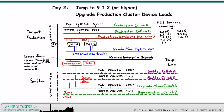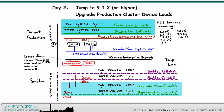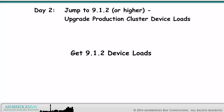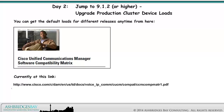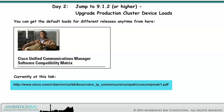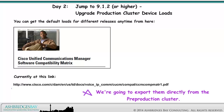This is an overview of the Jump Lab. This drawing looks at activities on the production and pre-production clusters. First, we need to get the 9.1.2 device loads. We do that using our cleanly installed 9.1.2 pre-production cluster. We can get the default loads from the Cisco Unified Communication Software Compatibility Matrix, currently available at this link, but we're going to export them directly from the pre-production cluster.